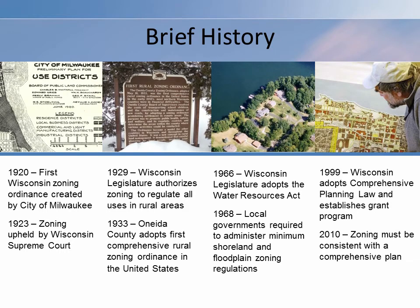The Standard State Zoning Enabling Act, published by the U.S. Department of Commerce in 1926 and adopted verbatim by most states, provided that zoning regulations shall be made in accordance with the comprehensive plan. In the rush to develop zoning ordinances, many communities ignored this requirement. A survey conducted in 1998 found that less than one-third of Wisconsin communities had a land use plan of any kind, and these plans varied widely in their content, quality, and age.